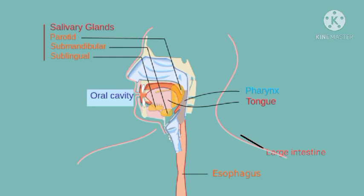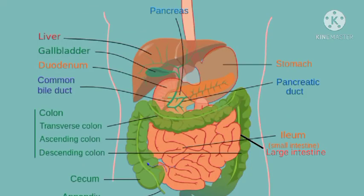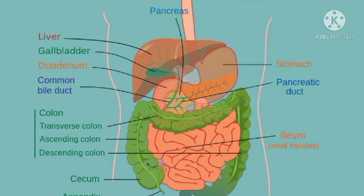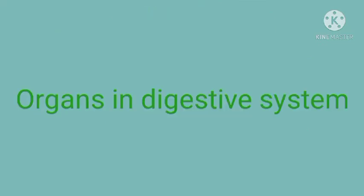The digestive glands consist of salivary glands, which are present in the mouth, the liver, and the pancreas. The liver and pancreas are glands attached to the alimentary canal to secrete their enzymes into the food.